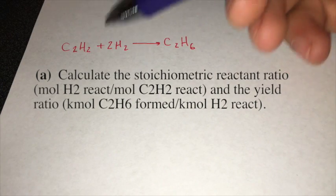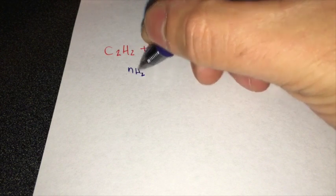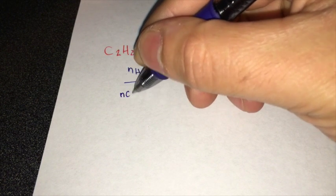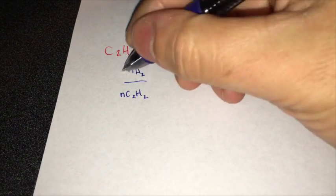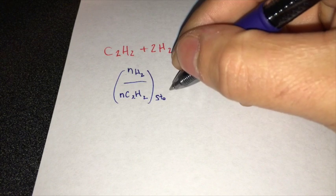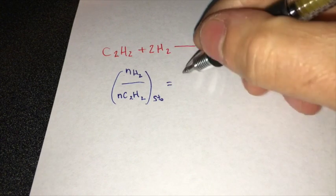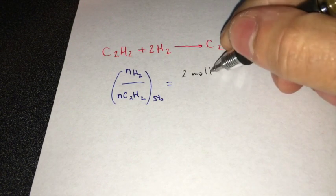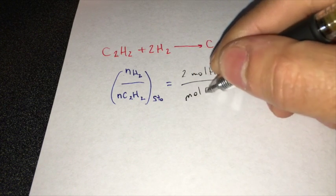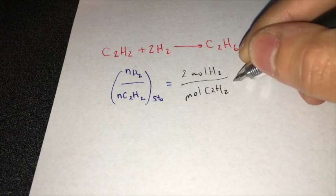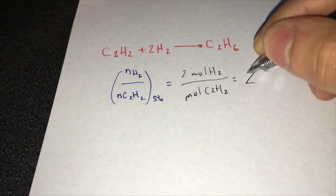So the mole ratio of H2 to C2H2 would be moles of H2 over moles of C2H2, equal to two moles of H2 over one mole of C2H2, which is equal to two.